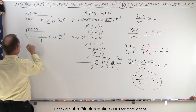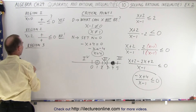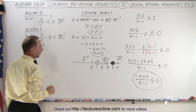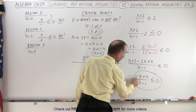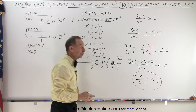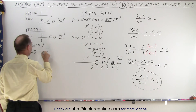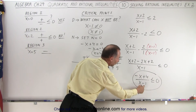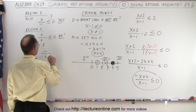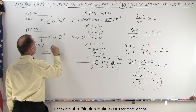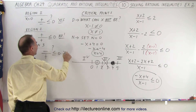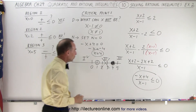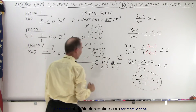For region three, let x equal five. Negative five plus four is a negative number, so the numerator is negative. Five minus one equals four, so the denominator is positive. A negative divided by a positive is negative, which is less than zero — so yes, region three is also satisfied.